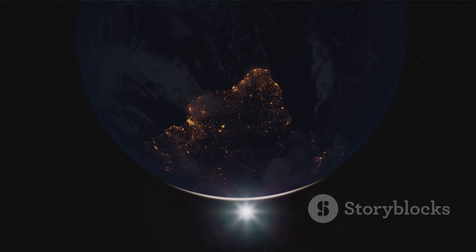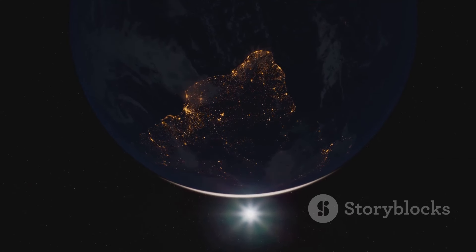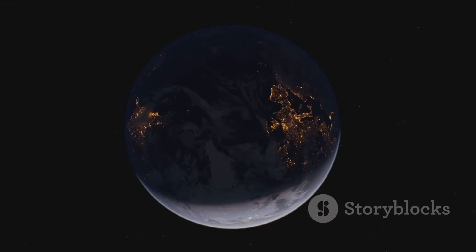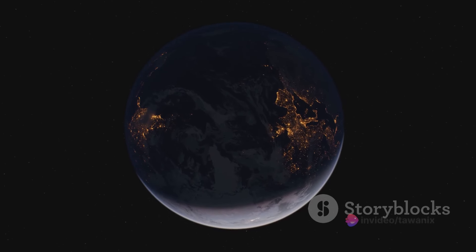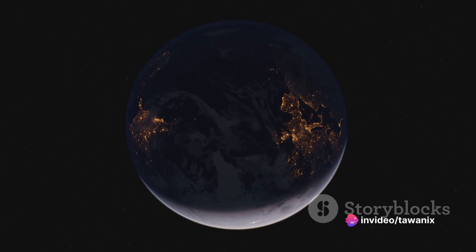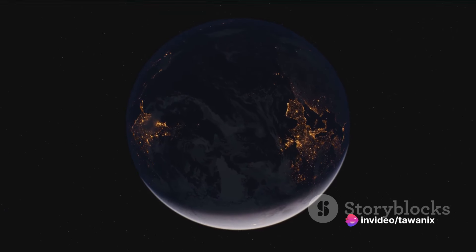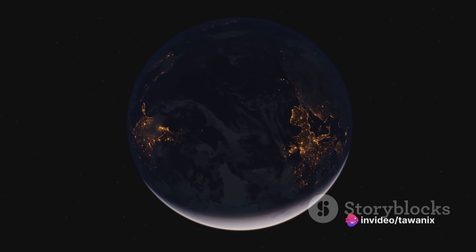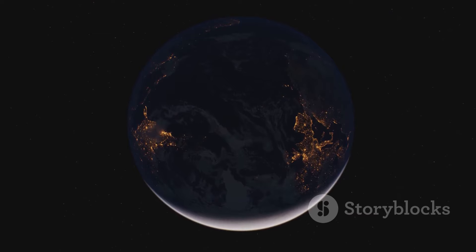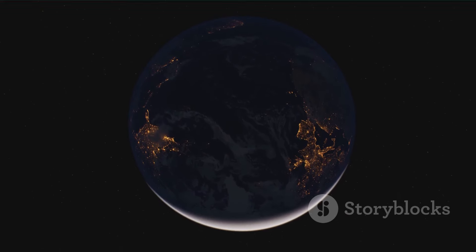As our planet spins, the centrifugal forces at work cause it to stretch at its equator, creating this distinctive shape. This isn't just a quirk of our planet's form. It's a direct result of Earth's rotation. Just like the unique patterns on a fingerprint, Earth's shape is a distinct mark of its daily spin.